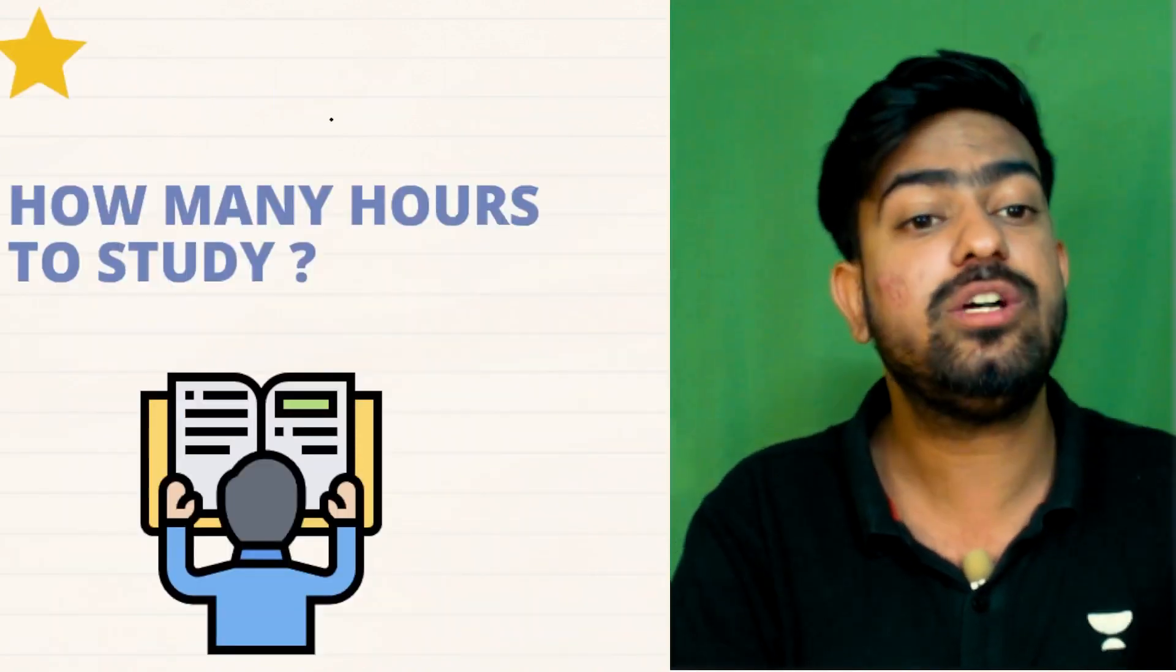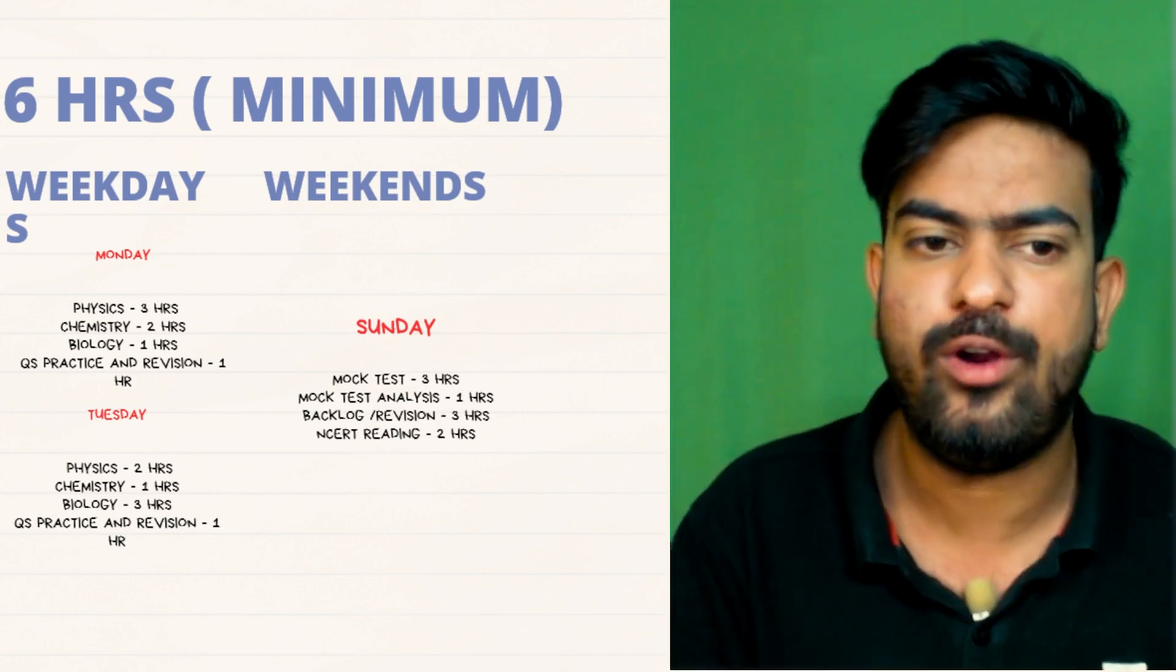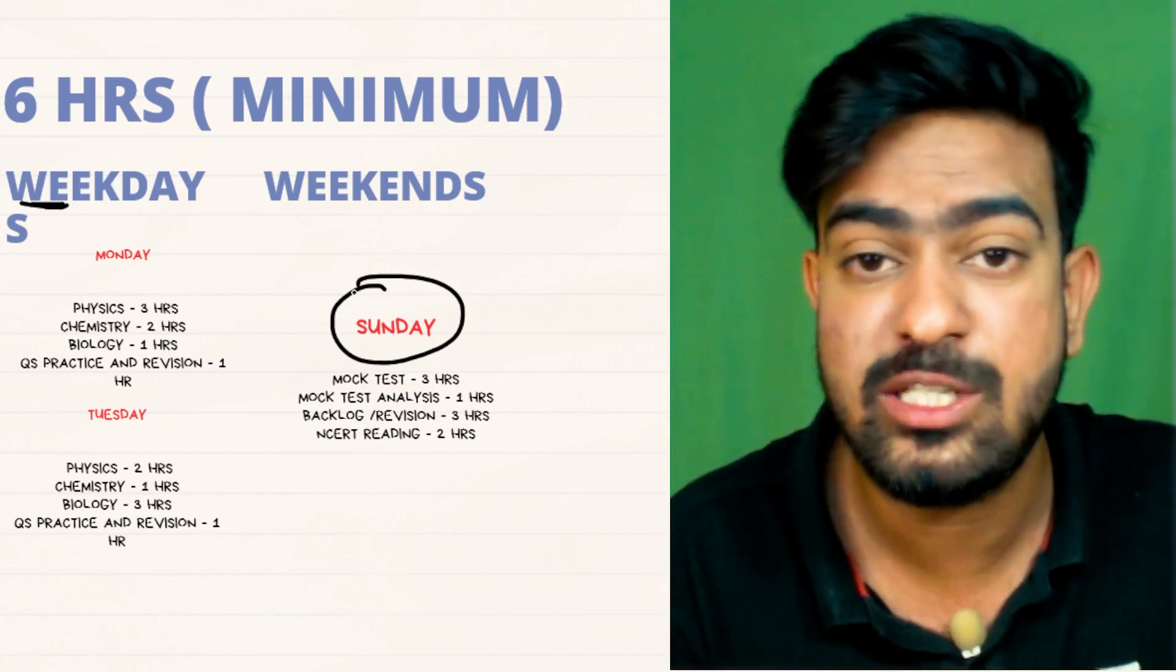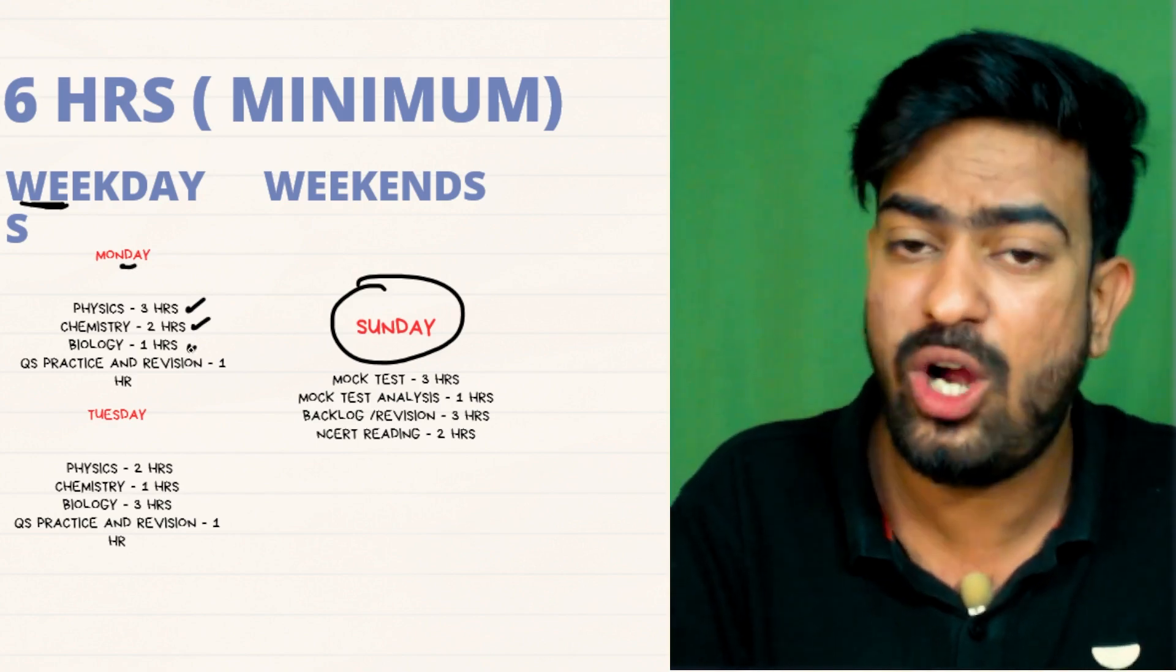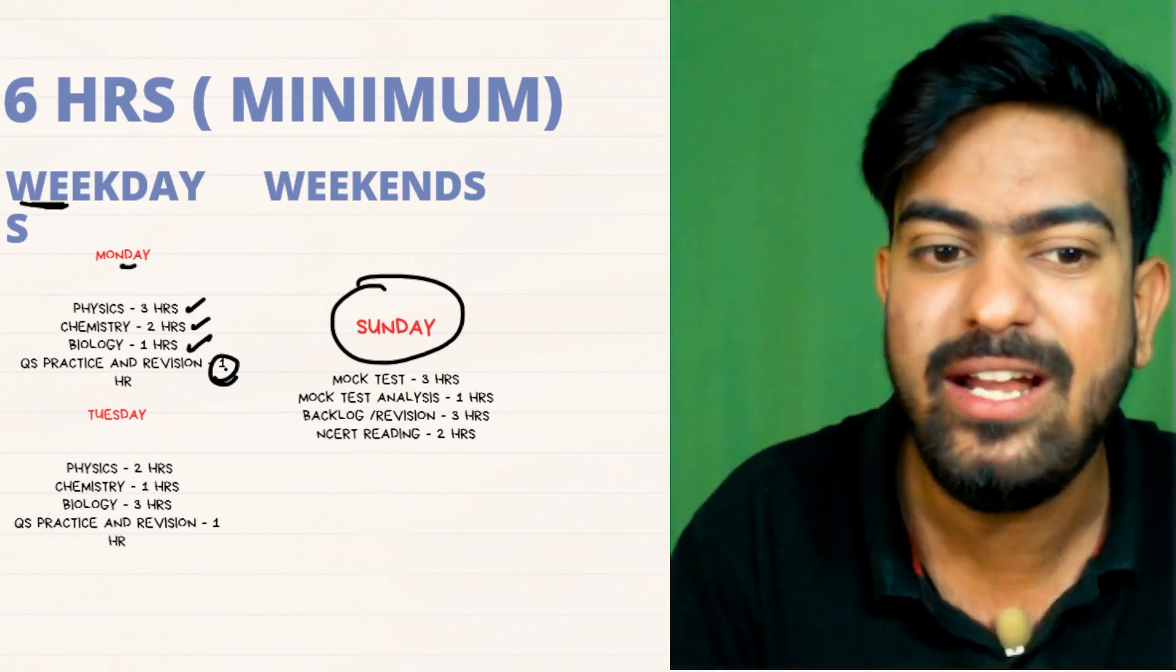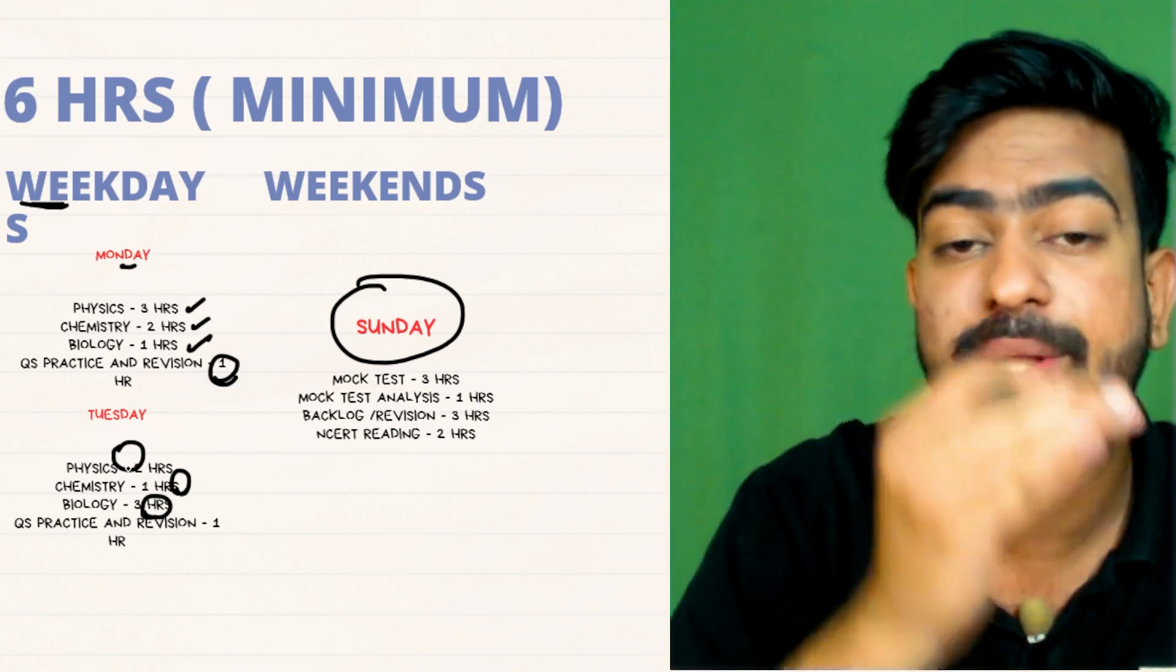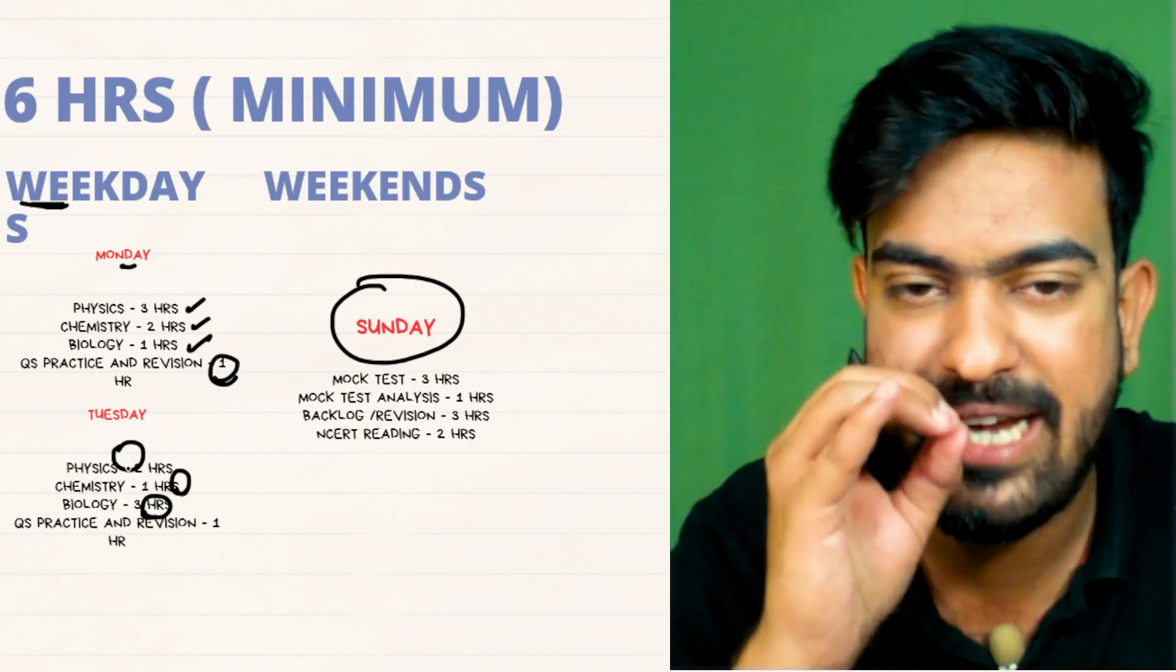Now the major question is, sir, how many hours we should study? So let's suppose that you are a school going student or you are a dropper. Minimum on weekdays you have to give six hours. And on Sundays, which is weekends, maybe Saturdays also, give as many as possible. So let's suppose on Monday you are giving three hours for physics, you are giving two hours to chemistry and give one hour to biology. All the three subjects we have done and for one hour question practice. But you might be having a confusion that what about chemistry and biology, we are giving so less time. So next day you give more time to biology, you give more time to chemistry, you give less time to physics. So you have to divide the chapters and the number of days according to you. Divide it and let me know in the comment section. I'll guide you if there is any mistake in your daily routine.